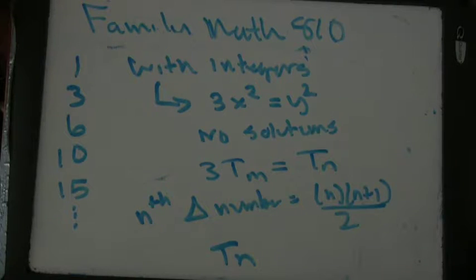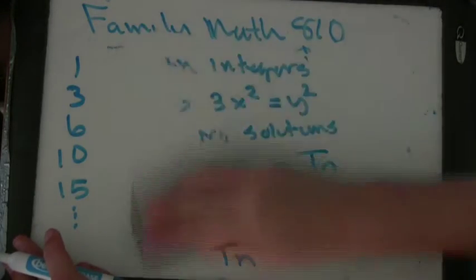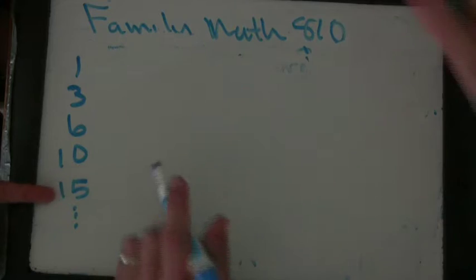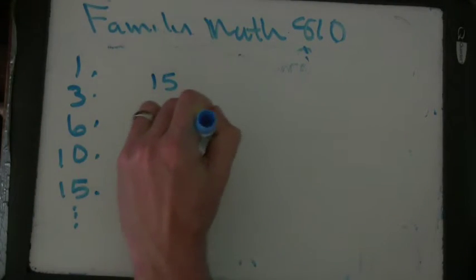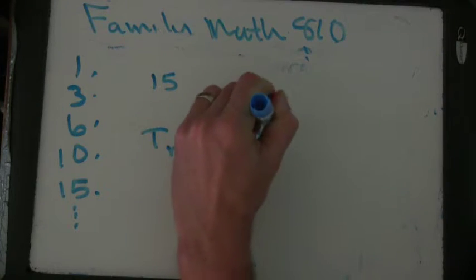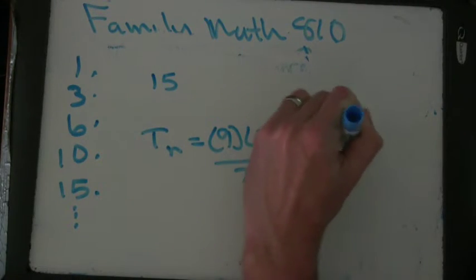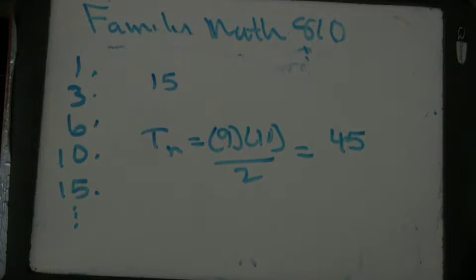So he gave an example that three times the fifth triangular number was equal to the ninth triangular number. So we can actually figure that out pretty quickly because the fifth triangular number, one, two, three, four, five, is 15, and then t_9, which is going to be 9 times 10 over 2, is 45, and 3 times 15 does indeed equal 45.